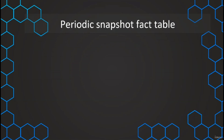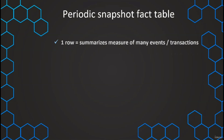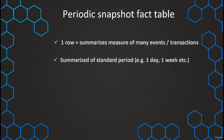In the periodic snapshot fact table, we have one row defined by the summarization or aggregation of a measurement across many events, taking place in a standard period. We aggregate all events and transactions and calculate the related measures for one specific standard period — usually one hour, one day, one week, one month, and so on. This standard period defines our grain.